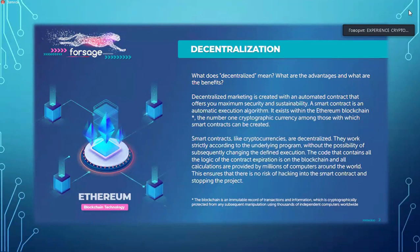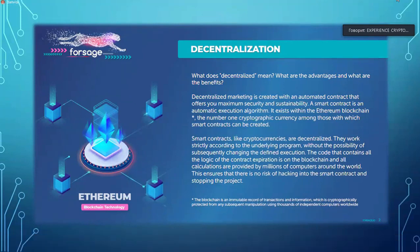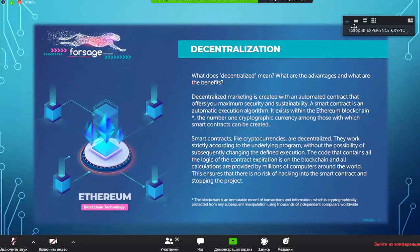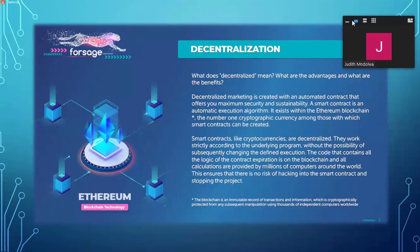A smart contract exists within the Ethereum blockchain — the number one cryptographic currency among those with which smart contracts can be created. Smart contracts, like cryptocurrencies, are decentralized. They work strictly according to the underlying program without the possibility of subsequently changing the defined execution. The code that contains all the logic of the contract is on the blockchain, and all calculations are provided by millions of computers all across the world.